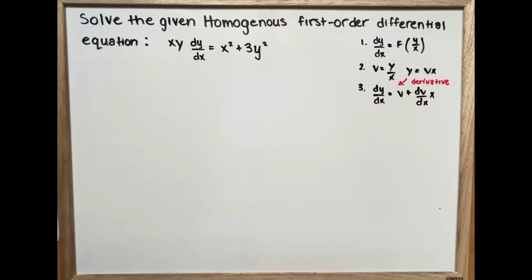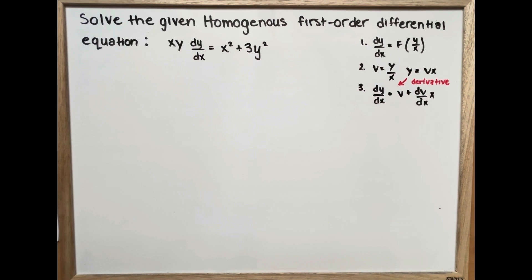Solve the given homogeneous first-order differential equation: xy dy/dx is equal to x squared plus 3y squared.